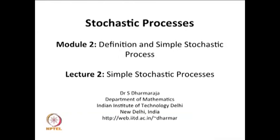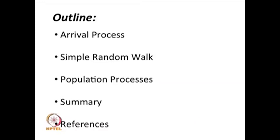This is Module 2: Definition and Simple Stochastic Processes, and today is Lecture 2 on simple stochastic processes. In Lecture 1 we covered the definition of a stochastic process, the classification based on time space and parameter space, and gave a few simple examples. In this lecture we are going to discuss some simple stochastic processes: starting with the discrete time arrival process (Bernoulli process) and the continuous time arrival process (Poisson process), followed by the simple random walk, a simple population process arising in branching processes, and then the Gaussian process.